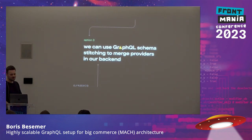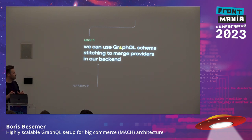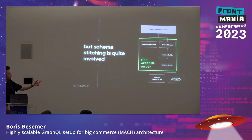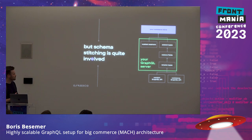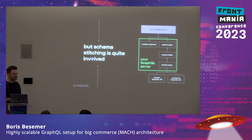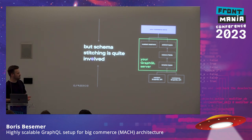Option three: use GraphQL schema stitching to merge those providers in the backend. Each of these SaaS providers might have a GraphQL API, and you take each of those APIs and stitch them together into one super API. But it's quite involved. One issue is there's no namespacing in GraphQL — it's all one big ball of types. For example, every commerce GraphQL API has an image type, and content services also have an image type. So you need to prefix them: a commerce image, a content image.